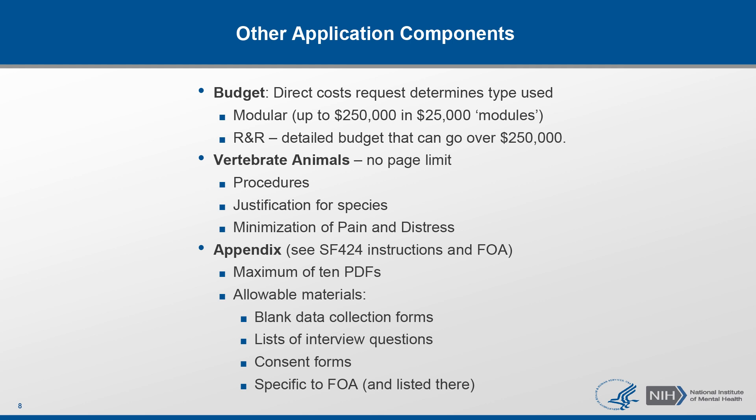If you're using live vertebrate animals, please provide a concise description of the proposed procedures to be used. You also have to provide justification that the species are appropriate for the proposed research, and discuss plans to minimize pain and distress, such as the use of anesthesia. Refer to the FOA to determine whether there are any special appendix instructions for your application. In general, a maximum of 10 FDA attachments is permitted.